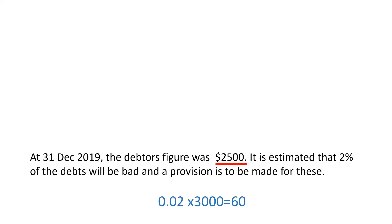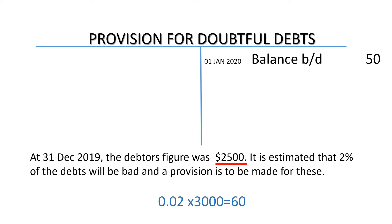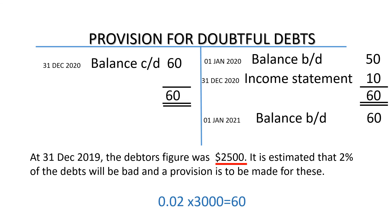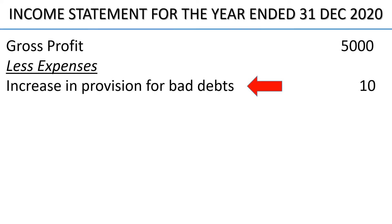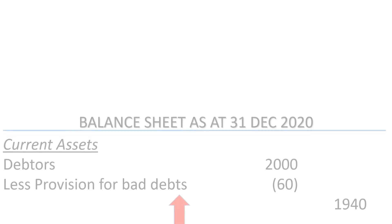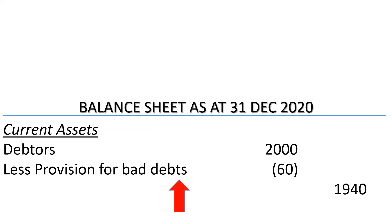This increase needs to be adjusted in the provision for doubtful debts account, income statement, and balance sheet. In the provision for doubtful debts account, the opening balance is $50 on the credit side. The provision has increased by $10 and this increase is recorded on the credit side. The account is then balanced off. The increase in the provision for bad debts is recorded as an expense and deducted from the gross profit in the income statement. In the balance sheet, the provision is deducted from debtors as shown.